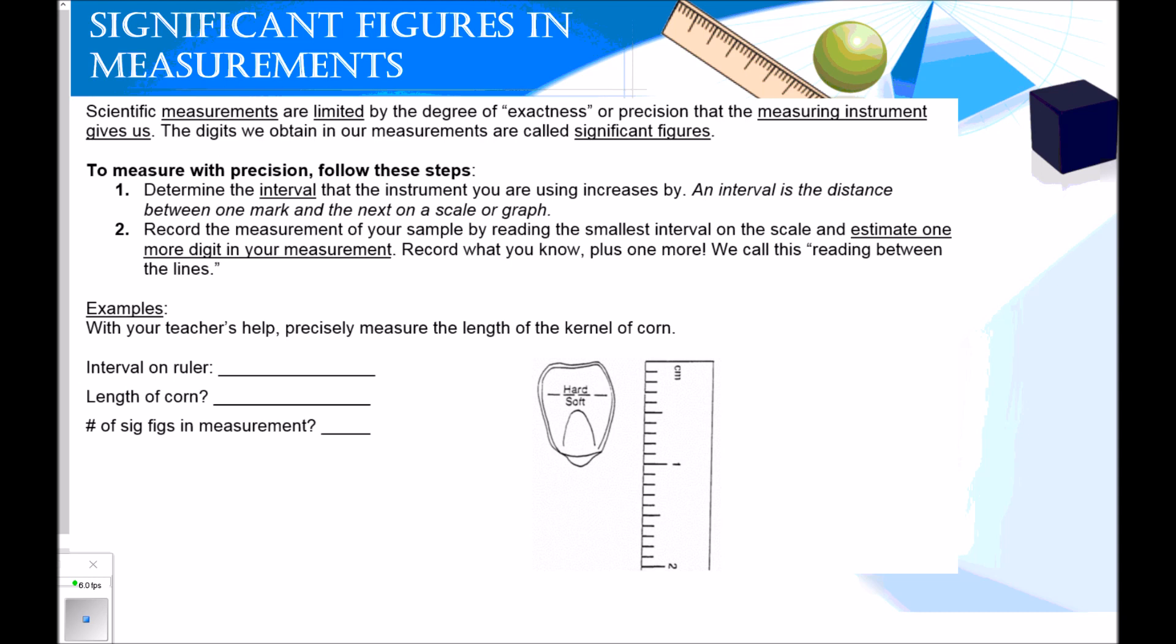We're going to measure this kernel of corn using this ruler here. First, it's asking us for the interval on the ruler. So what is the ruler increasing by? From here to here, that's a centimeter, but I've got all these little tick marks. So that's actually what's increasing by, the smallest division or distance that is marked on the measuring device. So each one of these is 0.1 centimeters. So how do I know that? From here to here, that's one centimeter. And then there are 1, 2, 3, 4, 5, 6, 7, 8, 9, 10 spaces. So 1 divided by 10 gives me 0.1. So each of these are worth 0.1.